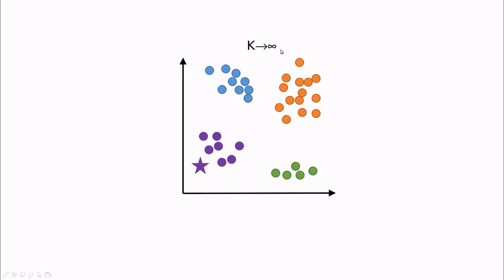But what if k is large? In extreme case, large, I mean an infinite value. Then all of these other points are going to be nearest neighbors. And in this case, the classification would give us an orange one. And this is kind of weird.